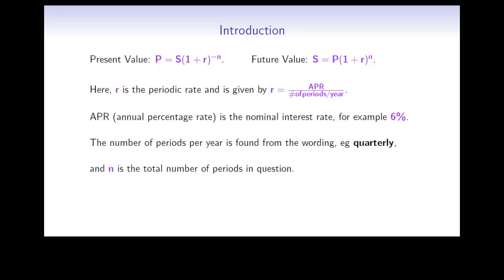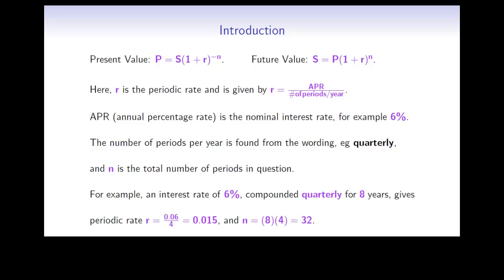N is the total number of periods in the question. For example, an interest rate of 6% compounded quarterly for 8 years gives a periodic rate of R equals 0.06 divided by 4, since it is quarterly compounding, which equals 0.015. And N is equal to 8 times 4 — times 4 since it's quarterly compounding — for a total of 32 periods.